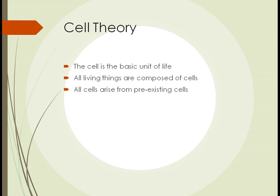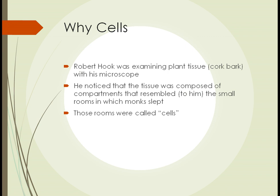One of the first things to understand about cells of any type is cell theory, a theory devised in the mid-1800s based on three main precepts. The first is that the cell is the basic unit of life. All living things are composed of cells. A key point is that all cells arise from pre-existing cells — cells are not created from scratch, but only by combining or splitting pre-existing cells.